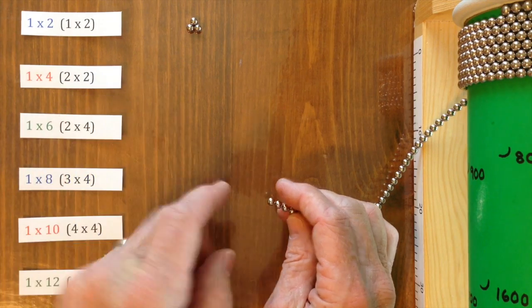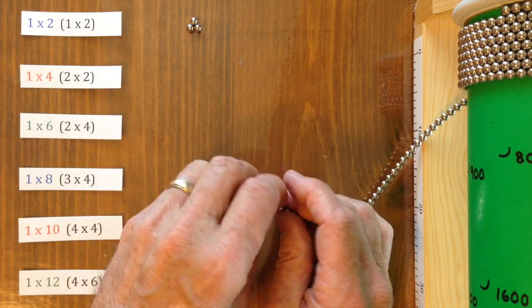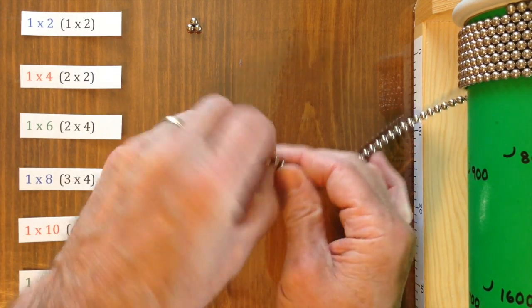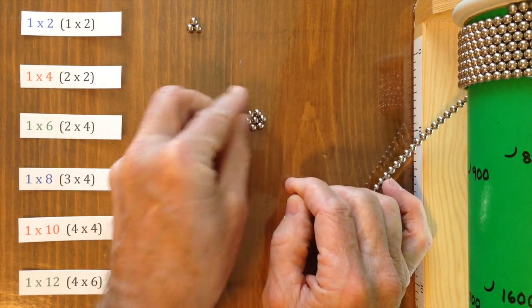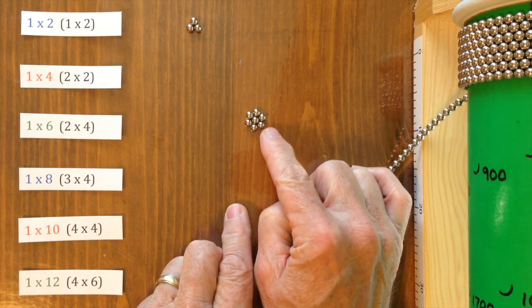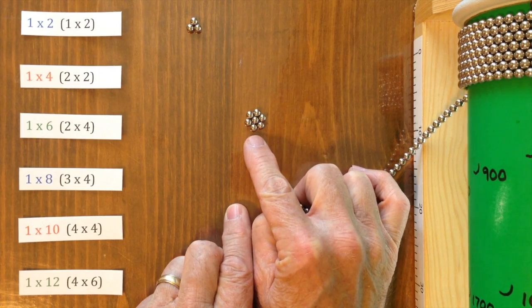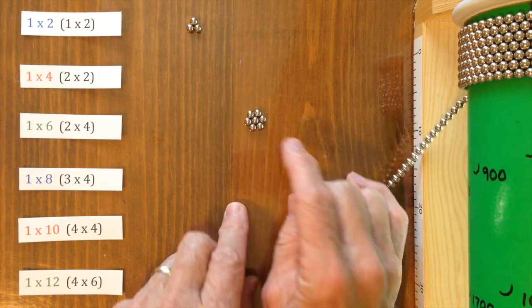The 1 by 4 is made by first making a 2 by 2 hexagon. So that's this. I mean that this side is 2 and that side is 2. This side is 2, 2, etc.